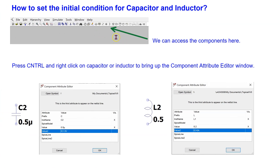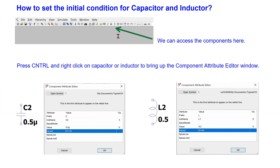In LTSPICE, the capacitor and inductor components can be conveniently accessed from the menu. In order to properly simulate RC and RL circuits, we need to set the initial voltage across the capacitor or the initial current through the inductor. This can be done by holding the control key and then right-clicking on the component symbol. This brings up the component attribute editor window where we can set the initial condition using the syntax shown here.